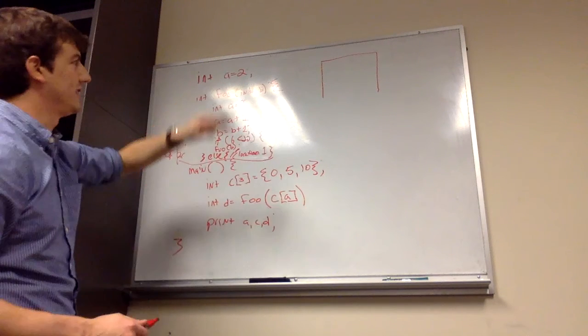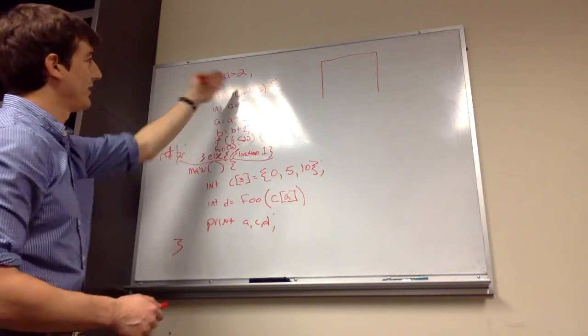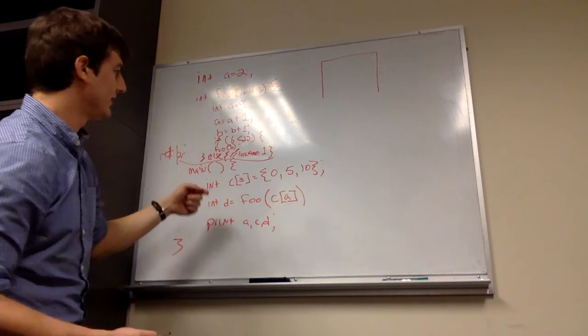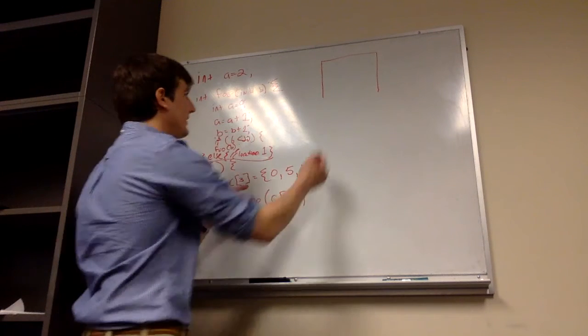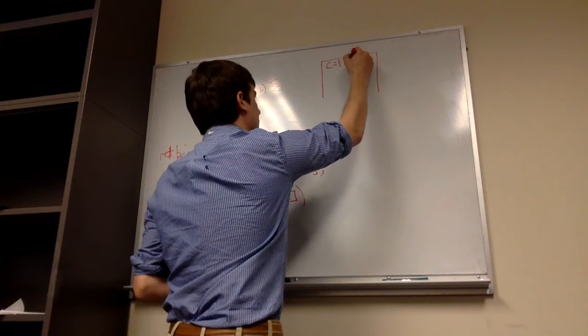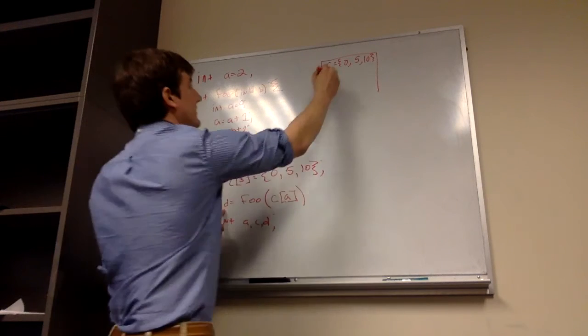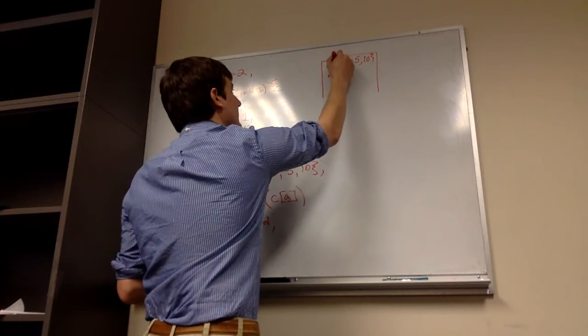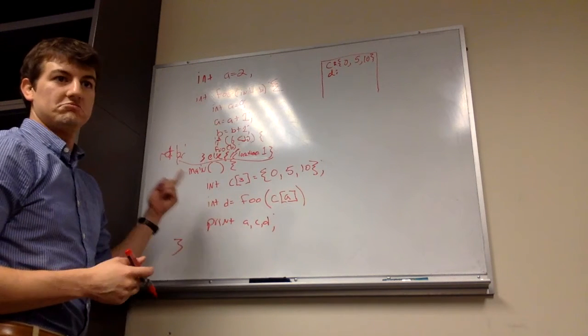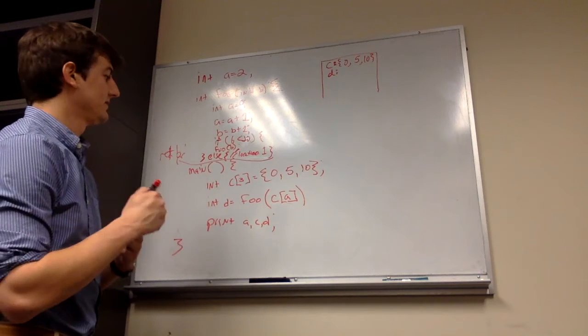The stack is always changing, but A, the location of A never changes throughout the entire program execution. So therefore, we're never going to change A. All right, so we have C and D as the variables inside of main. So we know we have C, and C is an array, so we'll just kind of draw it like we have it here. So it's 0, 5, 10. And then we have D. Do we know what the value of D is? No, right, because we're going to call foo. We have no idea what the value of D is.